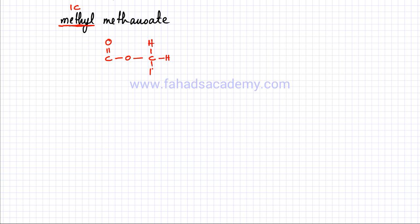I'm going to attach one carbon atom to the single bond O side and complete all the bonds with hydrogen. That's the methyl part. For methanoate — the other side — there is already one carbon at the C double bond O side when you draw the ester group, so I just need to complete its bonds with hydrogen. This is methyl methanoate.